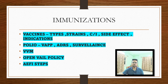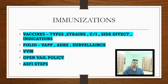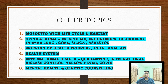Immunization is a very important topic — seven to eight questions will definitely come from it. They're mainly going to ask one to two questions on polio also. Read vaccine types, types of vaccines, strains of vaccines, contraindications, side effects, and indications of different vaccines, along with the immunization schedule of children and polio vaccine — both OPV and IPV policies.